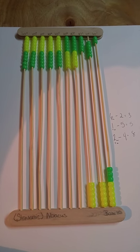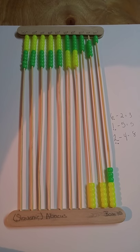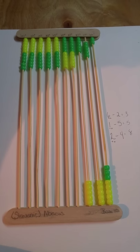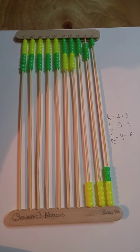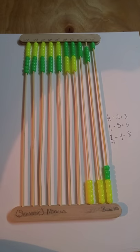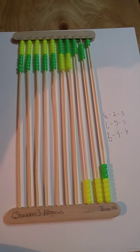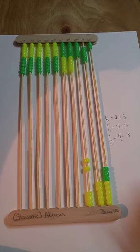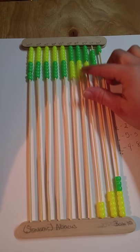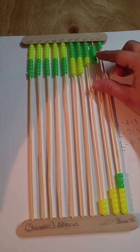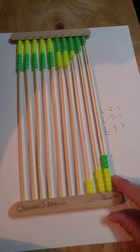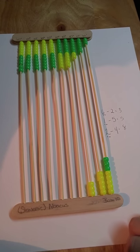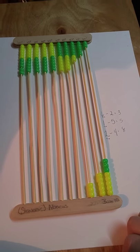Now looking at the hundreds place, we started out with six beads and we had to take one away to help the tens place. I've only got to subtract two, and I can fairly easily take two more away, which leaves us with 358 on our abacus.